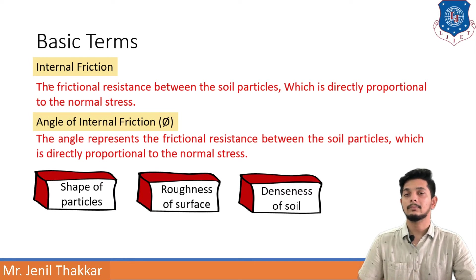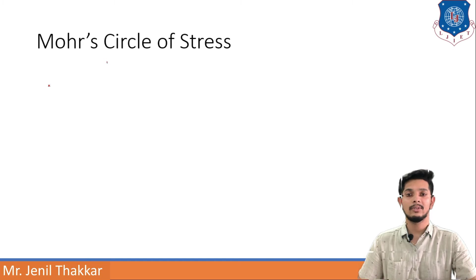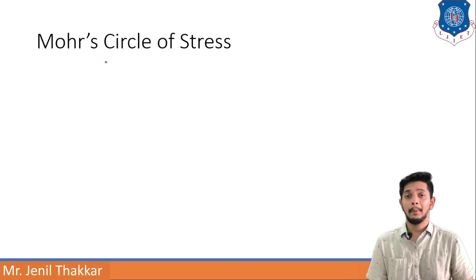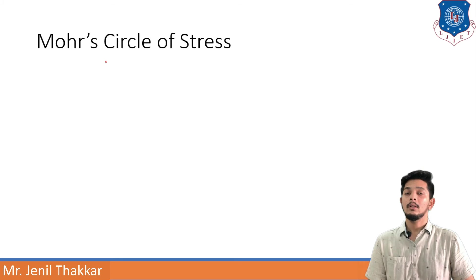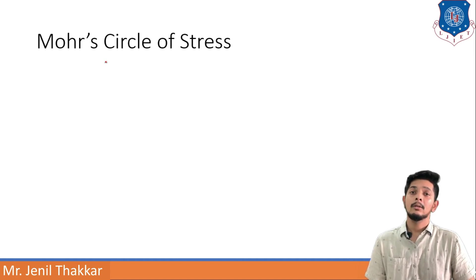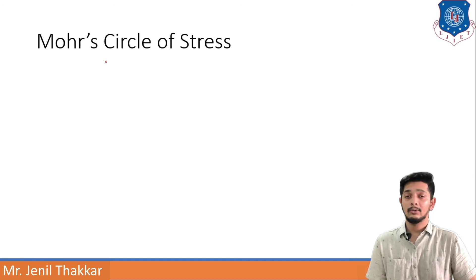Let us understand Mohr's circle of stress. According to Mohr, in any strained body there must be three mutually perpendicular axes under only direct stresses with no shearing stresses. These three axes are known as principal axes, and the planes through them are known as principal planes. The major, intermediate, and minor principal stresses act on their corresponding major, intermediate, and minor principal planes.